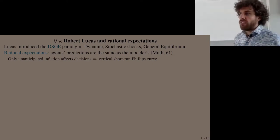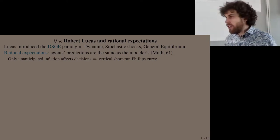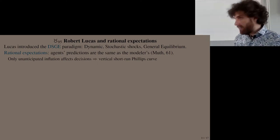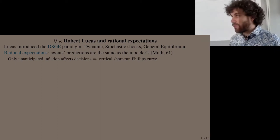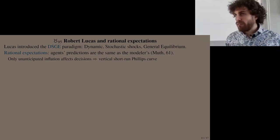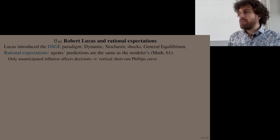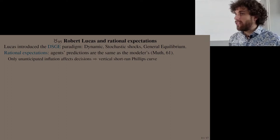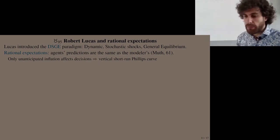On average, rational agents don't make mistakes — whereas adaptive learners make mistakes at every period.